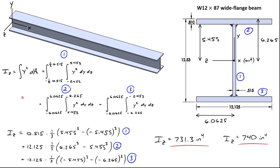What's interesting is just how little of a difference the web actually makes in terms of the area moment of inertia. For example, if we forget about the web altogether, delete that first term, I compute an area moment of inertia of only about 676 inches to the fourth power.